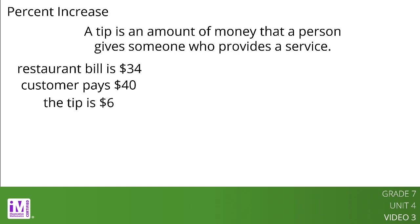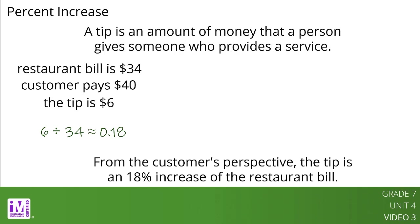We can find the percent that the tip is of the bill by dividing the tip by the bill. 6 divided by 34 is approximately 0.18. From the customer's perspective, we can think of this as an 18% increase of the restaurant bill. We can represent the situation with a tape diagram like this.